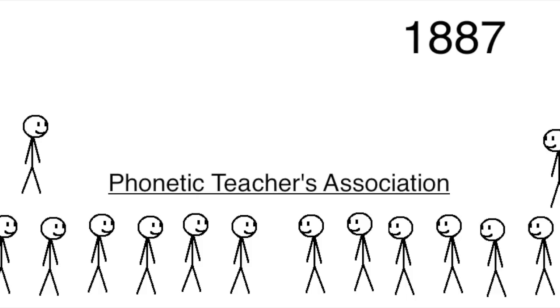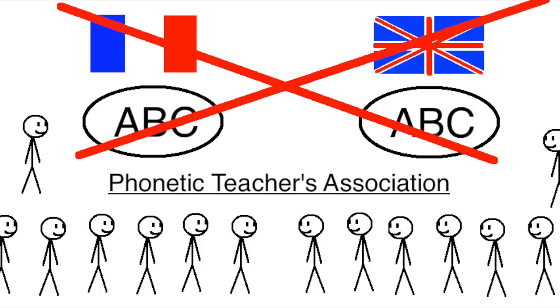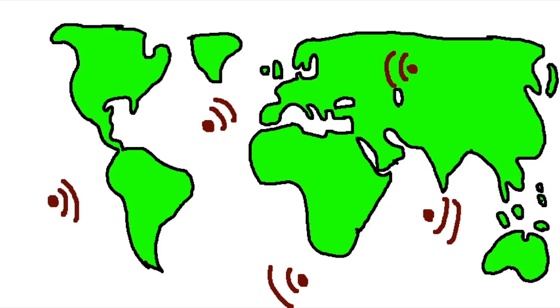In 1887, only one year after the group was founded, they decided that having a different phonetic writing system for each language was done. So they created the original version of the International Phonetic Alphabet. And it was awesome!